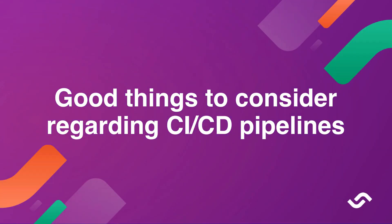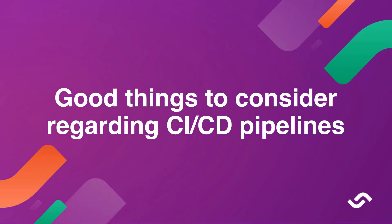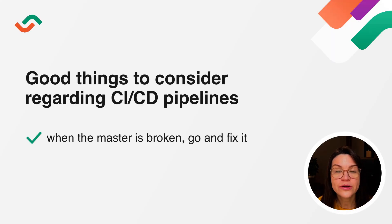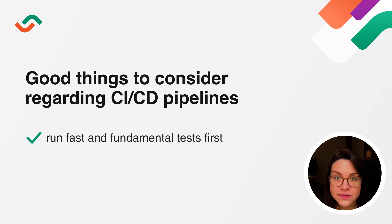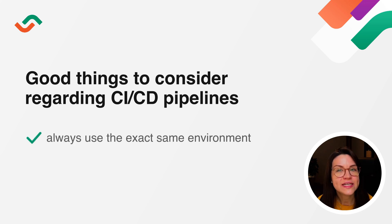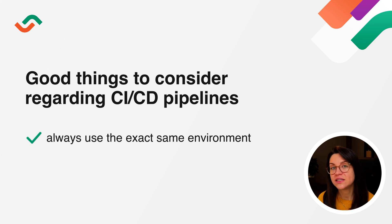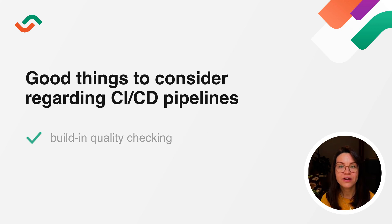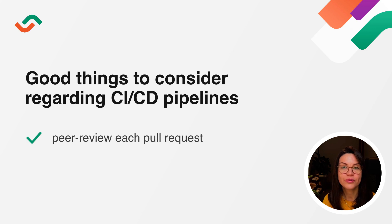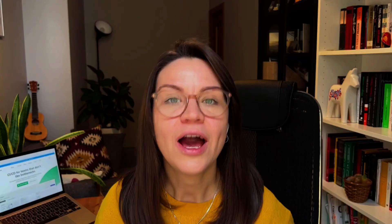Here are some good things to consider regarding a CI/CD pipeline. When the master branch is broken, drop what you're doing and fix it. Run fast and fundamental tests first. Always use the exact same environment — each workflow should start from the same clean and isolated environment. For building quality, peer-review new pull requests, as no CI/CD pipeline can fully replace the need to review new code.